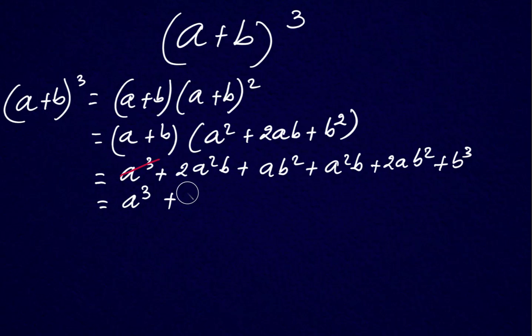Now look at the a squared b. It appears two times and one time, that makes it three times. So 3a squared b. And ab squared also the same way, it's one ab squared plus 2ab squared. That makes it 3ab squared.